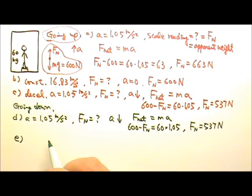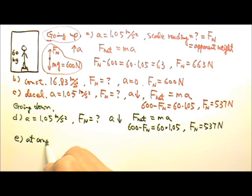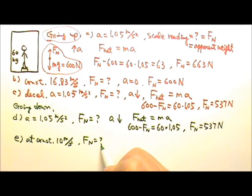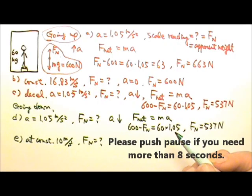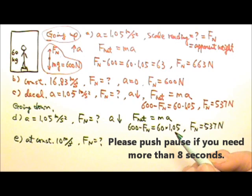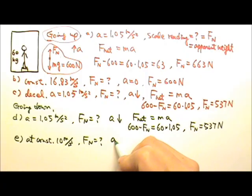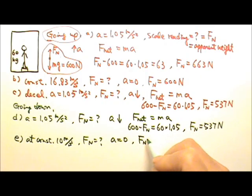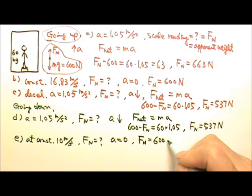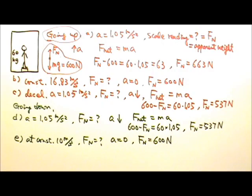Part E: The elevator goes down at a constant 10 meters per second. If it's going down at constant speed, the velocity is constant — direction doesn't change — so acceleration is zero. That means the normal force is the same as the person's normal weight: 600 newtons. Same as Part B.